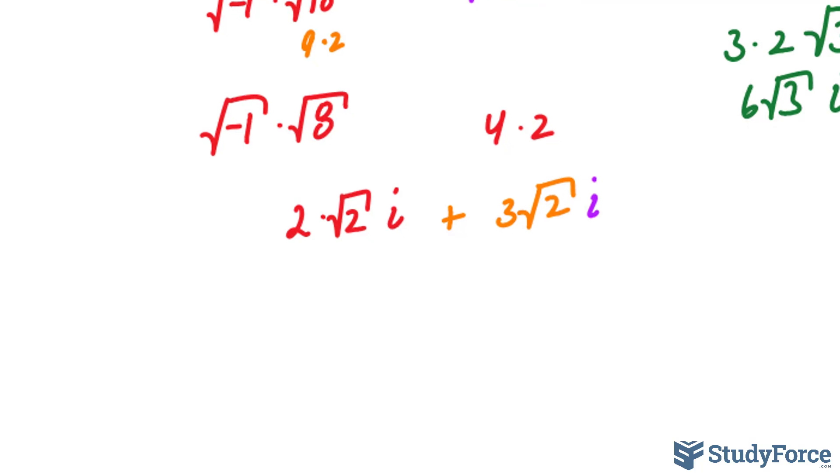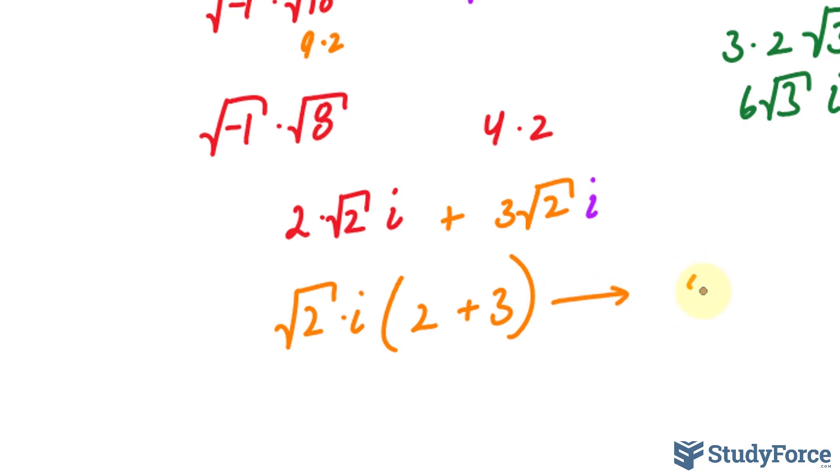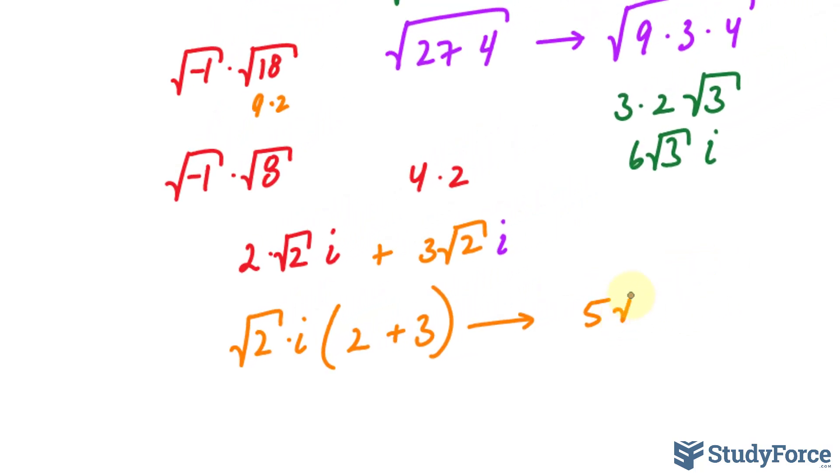As you can see, you can factor out the square root of 2 times i, and you get 2 plus 3, which is 5. So your final answer should be 5 times the square root of 2, i.